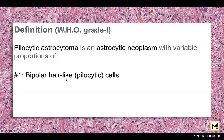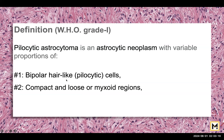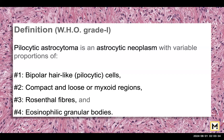The second factor that defines a pilocytic astrocytoma is the presence of compact areas along with loose or myxoid areas in the same tumor. Then you have the characteristic Rosenthal fibers, and the fourth cardinal feature is the presence of eosinophilic granular bodies. You may not see eosinophilic granular bodies in all tumors, but if you have two or three of these in a tumor then that is sufficient enough to make a diagnosis.